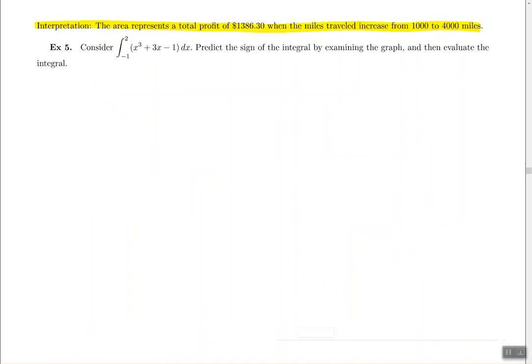And that's the concept we're talking about in example 5. So let's go ahead and plug this into your TI calculator, x cubed plus 3x minus 1. We're going to graph it from negative 1 to 2 and see what the graph is doing. Is there more area down here or up here?